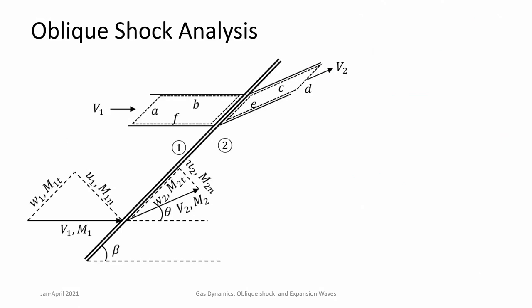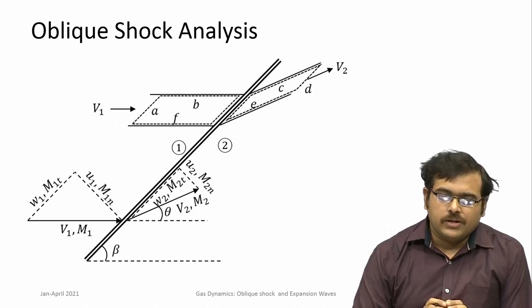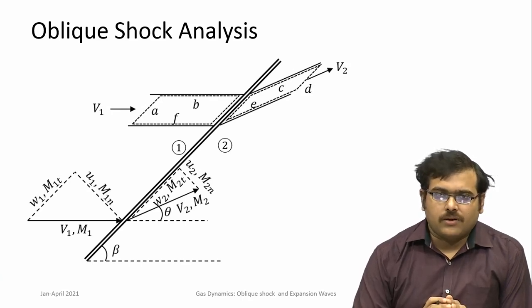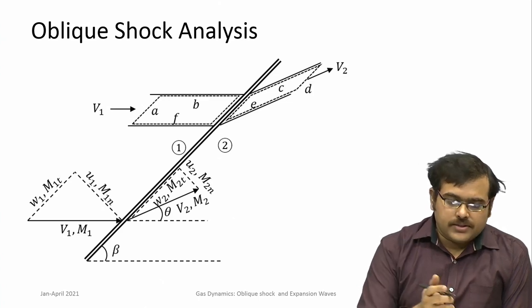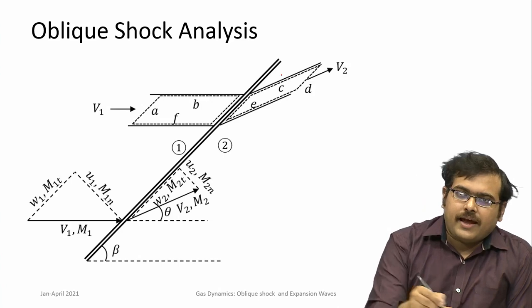How do we analyze oblique shocks? Oblique shock analysis borrows from normal shocks as well as the idea of jumping onto the shock, as we did for moving normal shocks. Even in oblique shocks it is the same thing. This is a steady flow — not an unsteady flow. The shock is oblique, at an angle to the flow, not normal to it, so there are components in both x and y directions.